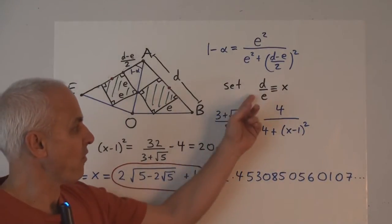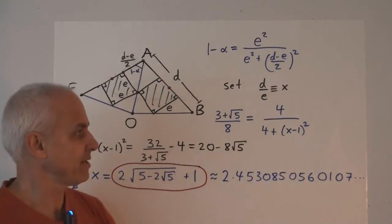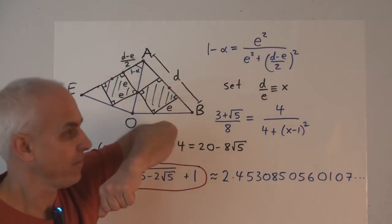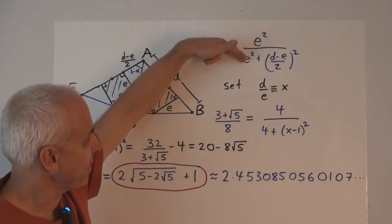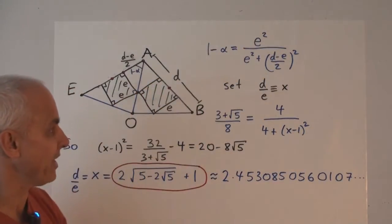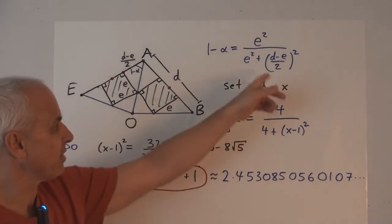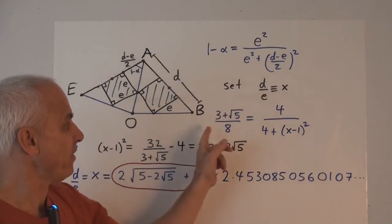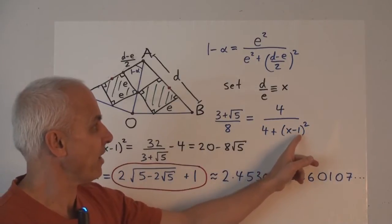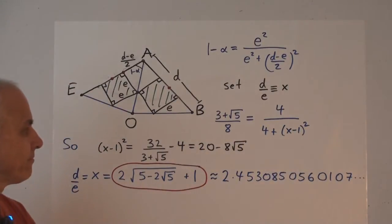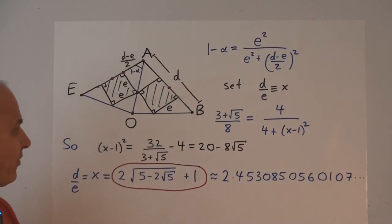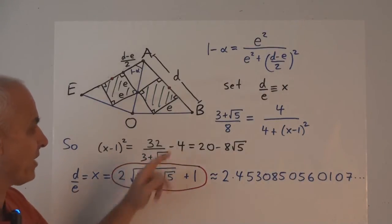We're interested in this ratio D over E, so let's set that equal to X. That's convenient because if we divide top and bottom here by E squared, then that becomes 1, that becomes 1. And what's inside here, there's a D over E minus 1. So it would be like an X minus 1. So if we multiply by 4 also, then we'll get 1 minus alpha, which is 3 plus root 5 over 8, equals 4 divided by 4 plus this X minus 1 all squared. And if we bring that to the other side and then divide by that, we get X minus 1 squared equals 32 over 3 plus root 5 minus 4.